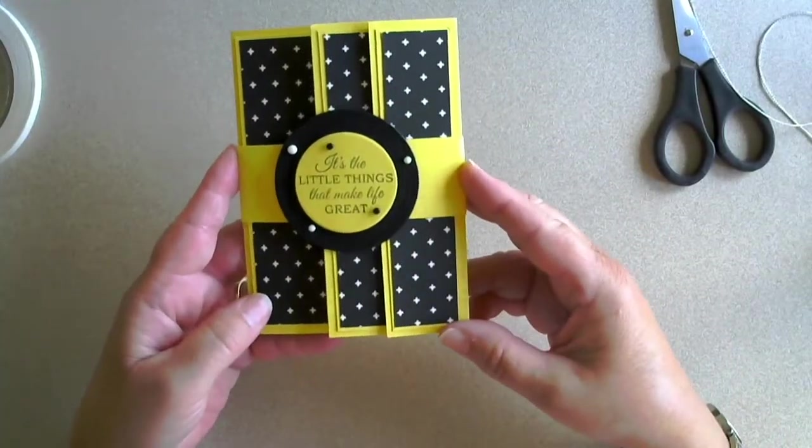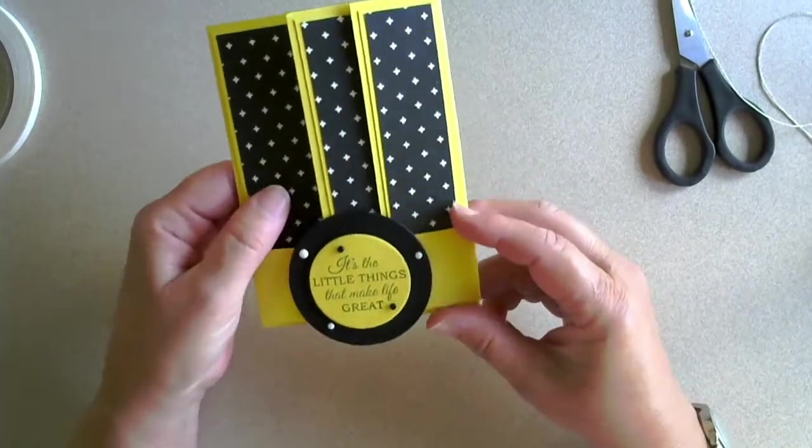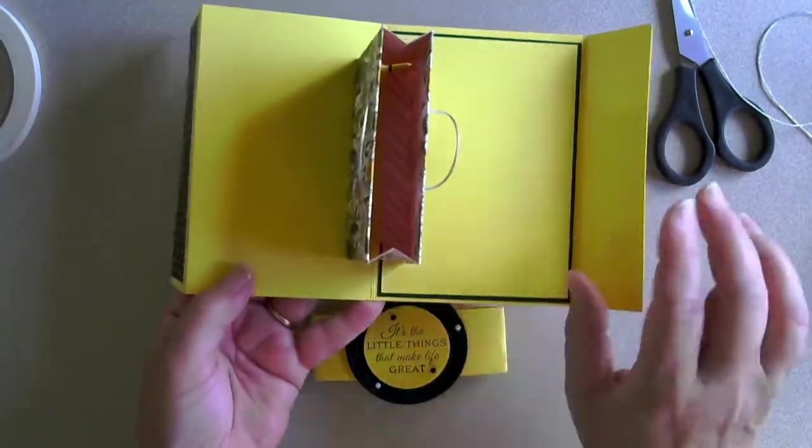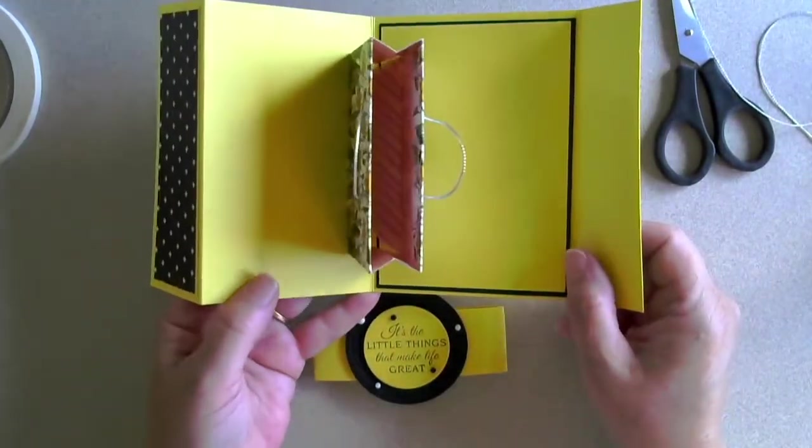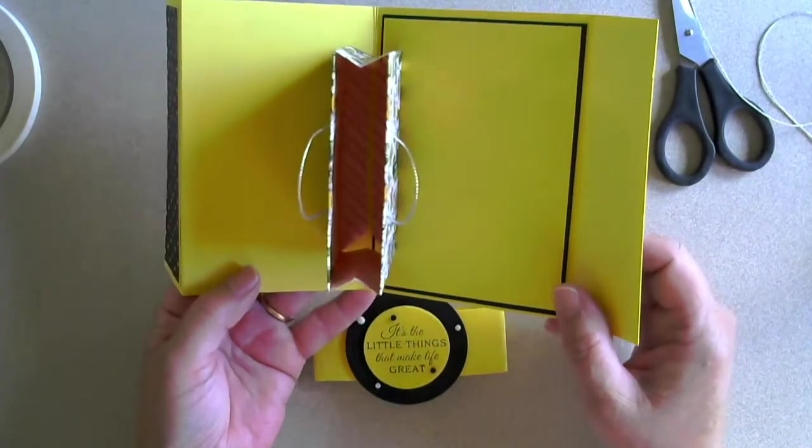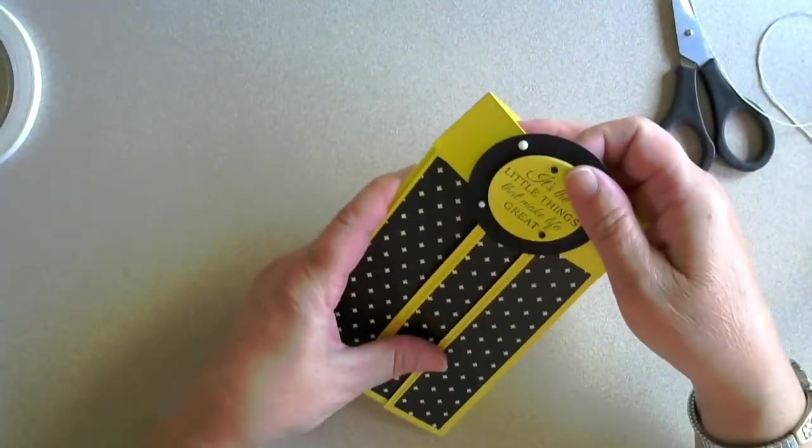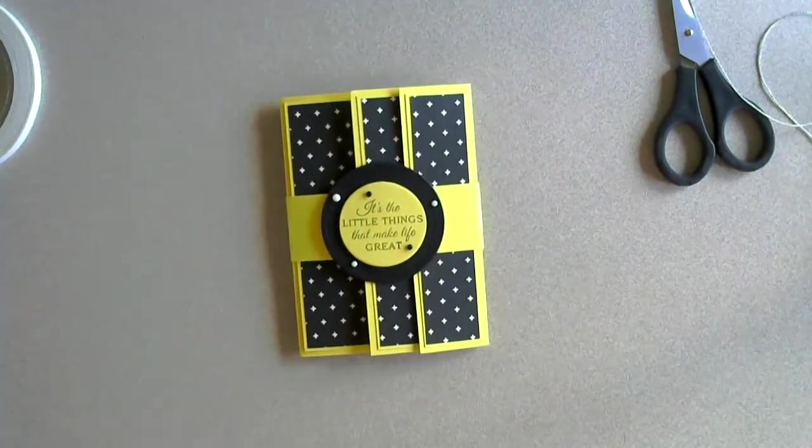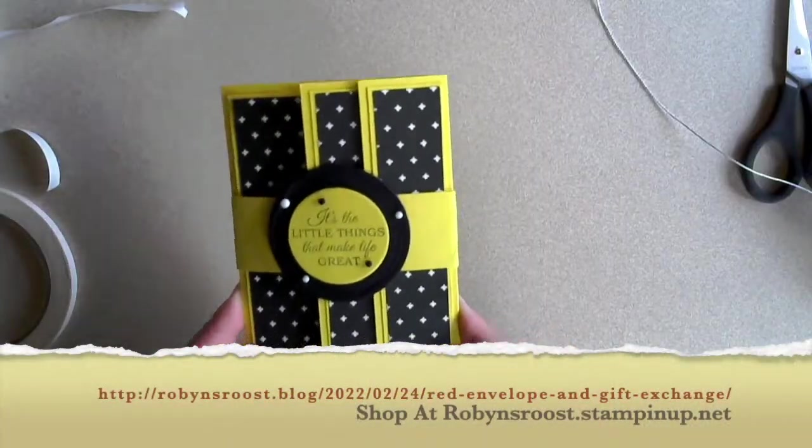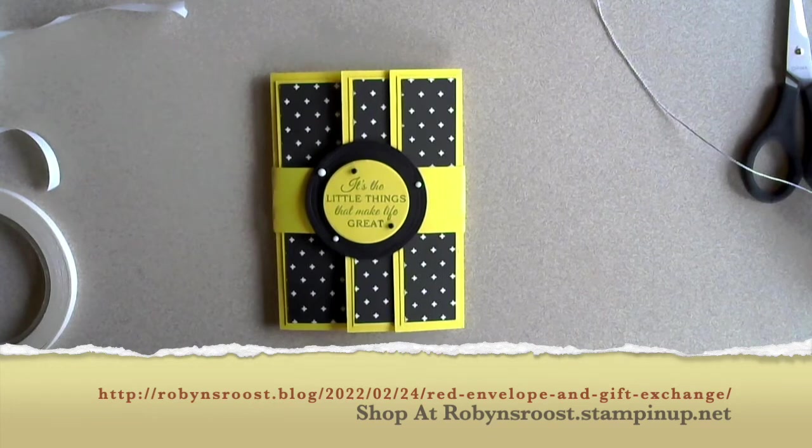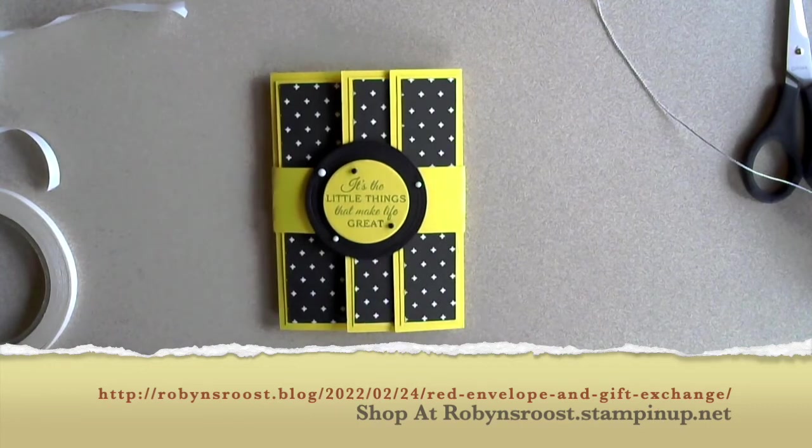So here is our completed card. And then when the recipient takes the belly band off and opens it up, you'll have some fun little gift in here, maybe a little chocolate treat or maybe a gift card for a coffee or something. So I hope you enjoyed this. As I said, I will have the link below for the measurements and I will change that measurement on my blog that I had wrong in here. Something always goes wrong, right? So hope you have a great day and thanks for stopping by at the Roost.